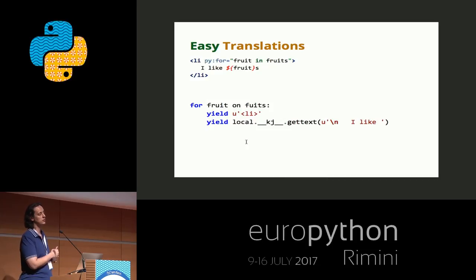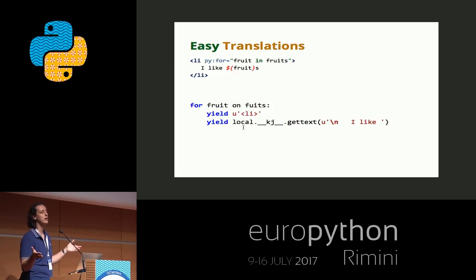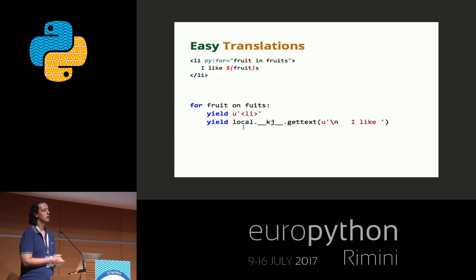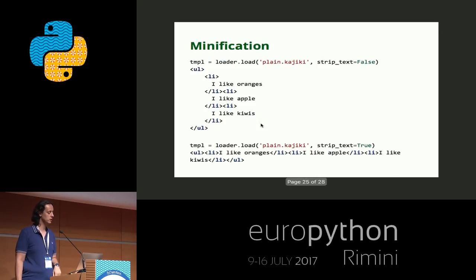For translation, if I write something like 'I like fruit', Kajiki automatically detects that the 'I like' part can be translated — it's simple text that is interesting for humans and not interesting for the HTML parser. So it's something that can be translated, and it automatically wraps the text for you into a gettext call. If you didn't provide any translation, it will just output the default text you wrote. If you provide the translation, it will correctly translate it.